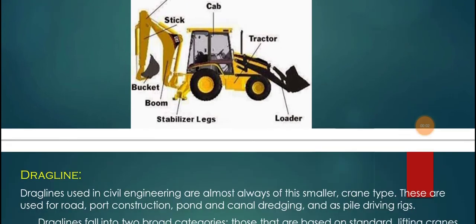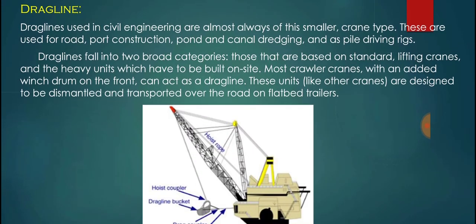The next construction equipment is the dragline. It is commonly used in coal mines and for almost every digging purpose, including road and port construction, pond and canal dredging, and pile driving. This equipment is essentially a smaller version of a crane. The main purpose of the dragline is dredging for different kinds of construction activities. Draglines fall into two broad categories: those based on standard lifting cranes, and heavy units which have to be built on site.